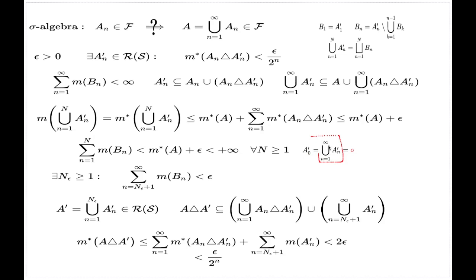We know that the countable union of a_n dash coincides with the similar countable union of b_n. I just split it into subunions. The first part corresponds to my choice for A dash. The second part, because it's a disjoint union now, its measure is less than epsilon.